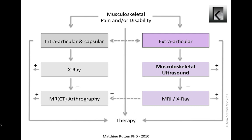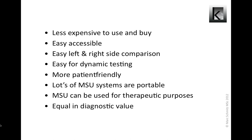MSU is preferred over MRI for extra-articular structures due to numerous advantages. One important advantage is that one can test the patient dynamically. Is there a suspicion of subacromial impingement? Place the transducer on the patient and see what happens with the supraspinatus and acromion when the patient makes an abduction movement. All these advantages from MSU come with a high general diagnostic value, equally to MRI.